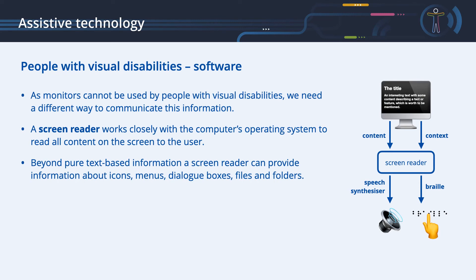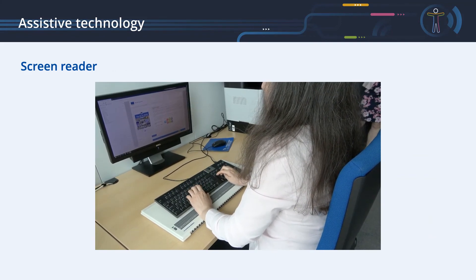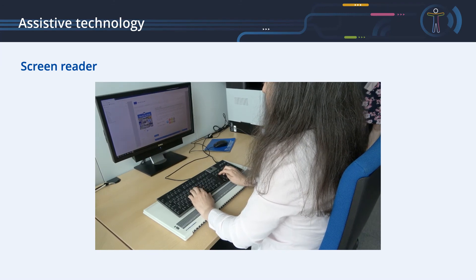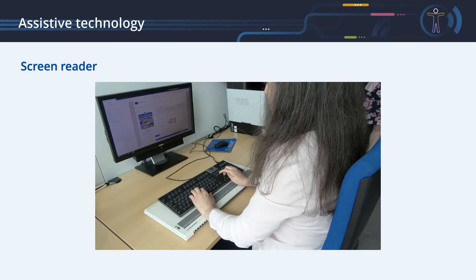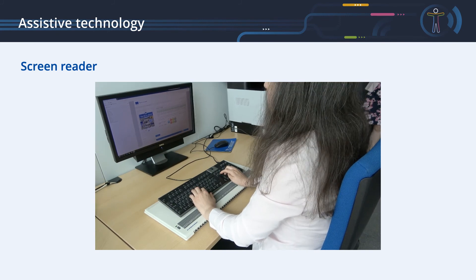Assistive technology for people with visual disabilities — Software. As monitors cannot be used by people with visual disabilities, we need a different way to communicate information. A screen reader works closely with the computer's operating system to read all content on the screen to the user. Beyond pure text-based information, a screen reader can provide information about icons, menus, dialog boxes, files, and folders. For more information about screen readers, please refer to the screen readers chapter.